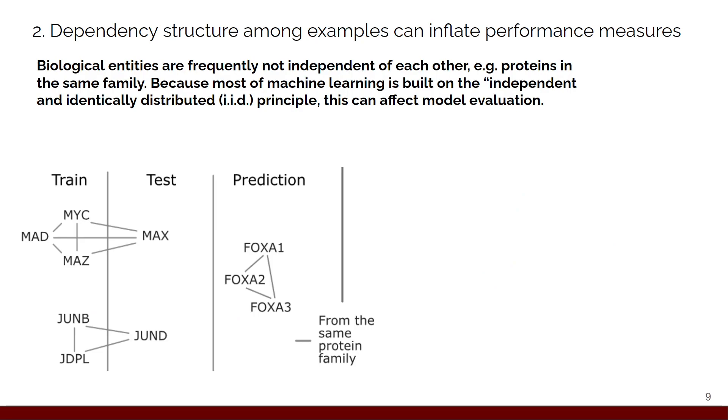The second pitfall relates to dependency structure among examples. Basically, imagine that you have a bunch of proteins. Proteins from the same family are probably going to be similar to each other, but if you take your data in like most machine learning practitioners do, where it's just a table where each row is a different example, each column is a different feature, you may ignore the dependency structure between these different examples. So frequently what you'll see is that maybe you do cross-validation with your proteins. You have some proteins from the same family in your training set, some proteins from that family in the test set, and you observe fairly good performance. Now someone goes to use your method and applies it to a totally new protein family, and they observe much worse performance.